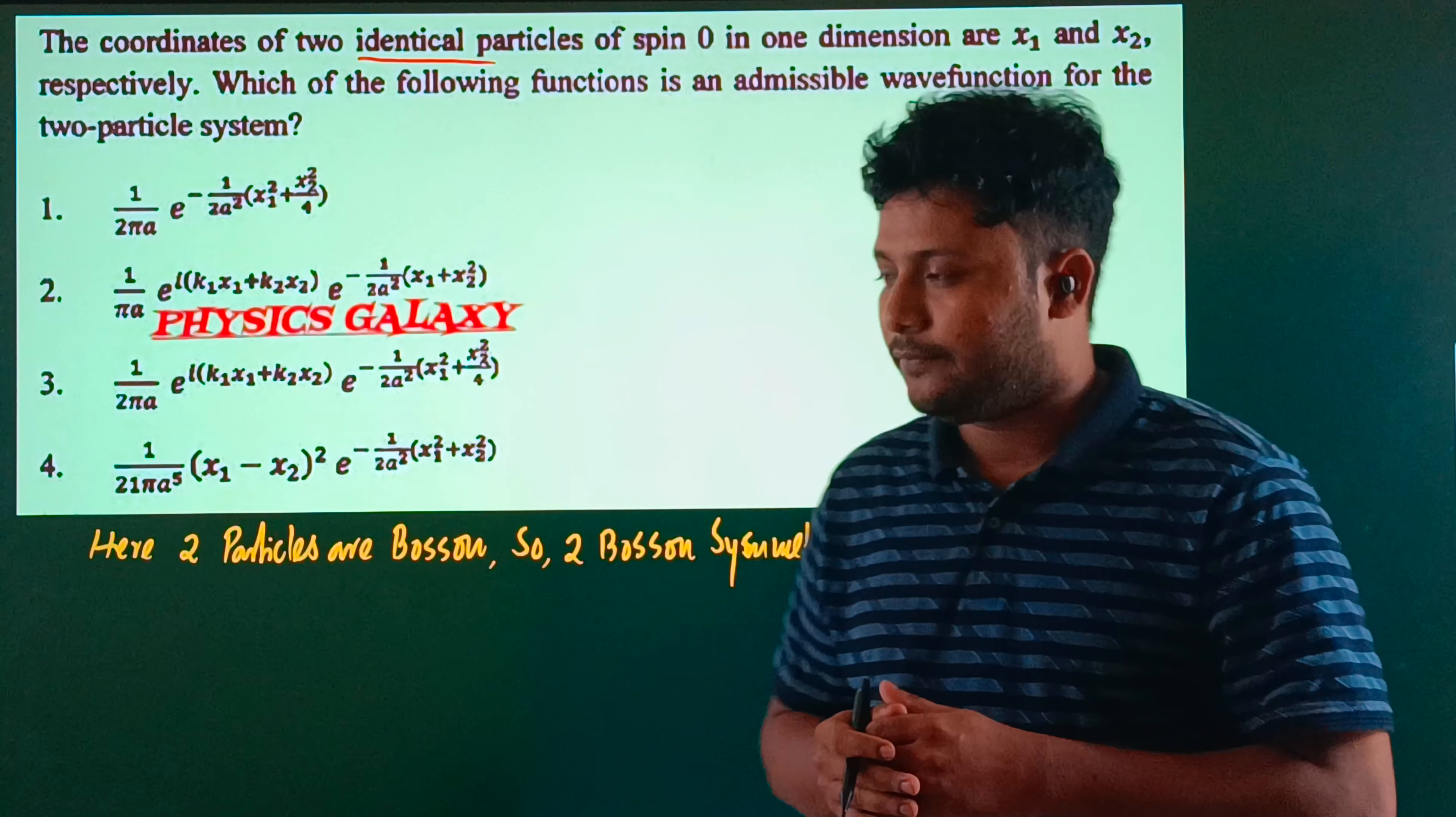For two bosons, the combined wave function must be symmetric. We will test the options to check if they are symmetric. The first option is ψ(x1,x2) = 1/(2πa) exp[-(x1² + x2²)/(2a²)]. We test this by interchanging the coordinates.